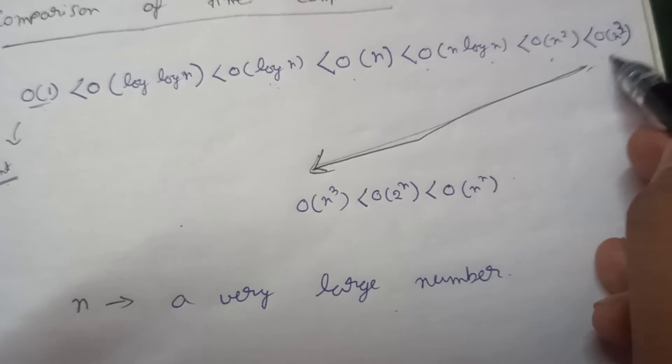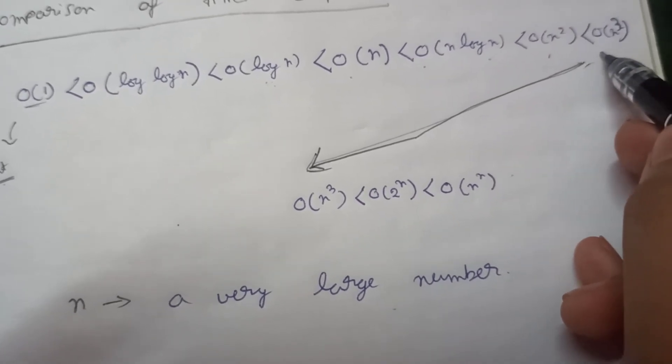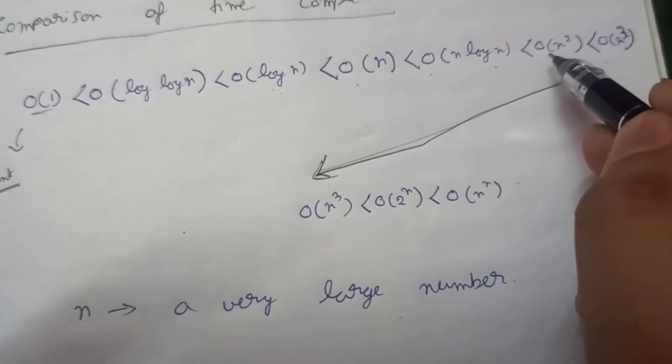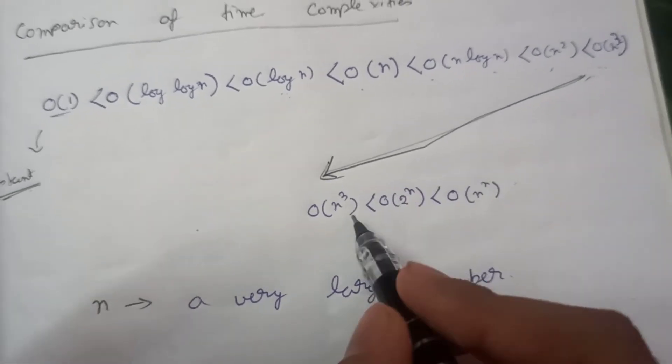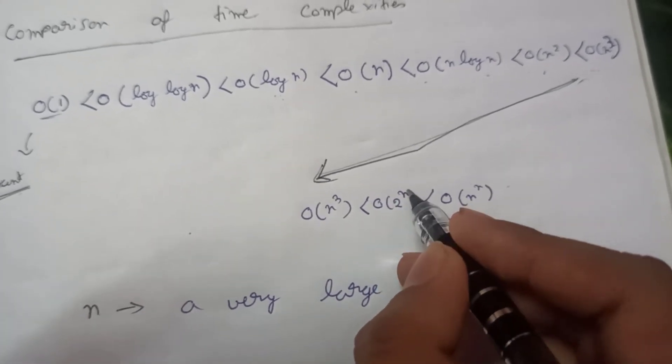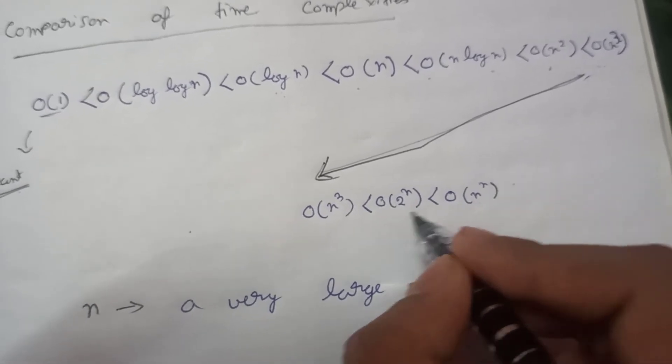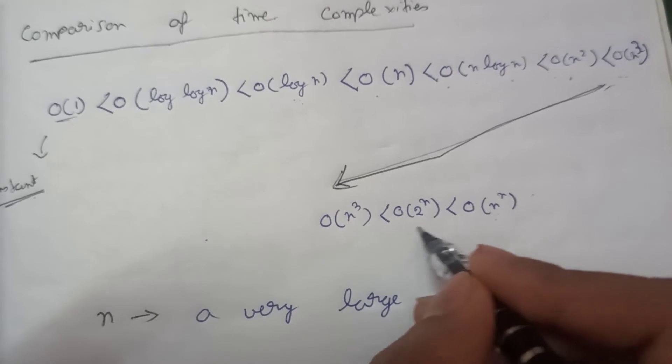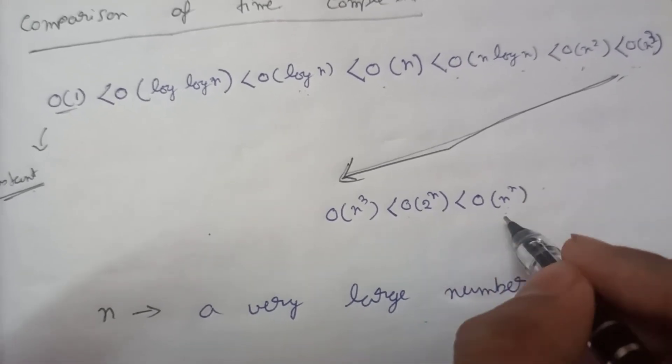Now order of n squared, order of n cubed. These are polynomial time complexity. And after that we have order of 2 to the power n, order of n to the power n, these types of things. These are exponential time complexities. These are huge time complexities. So we always try to avoid this.